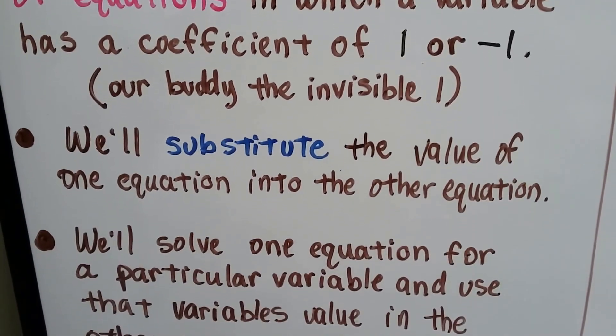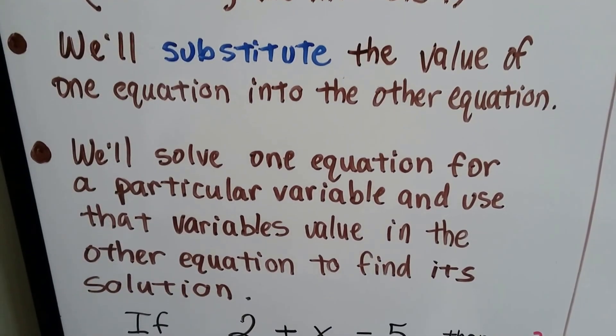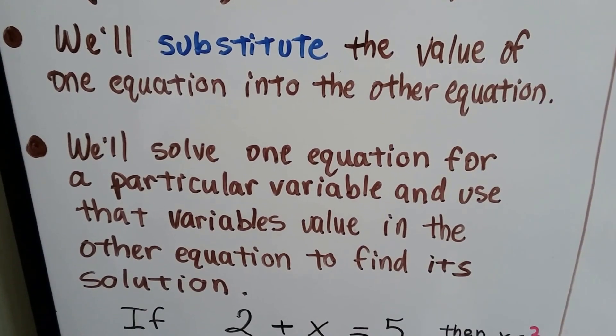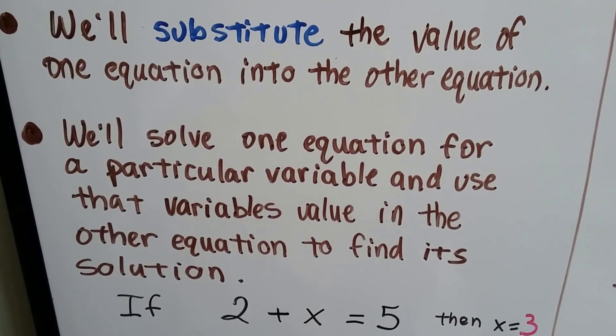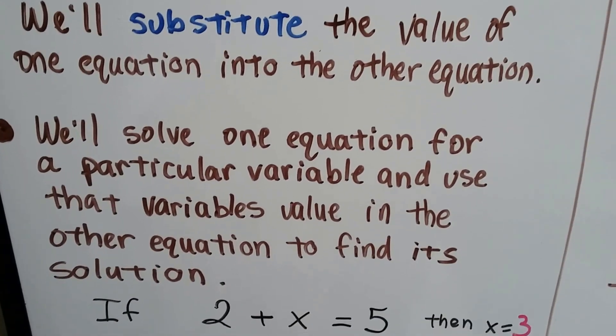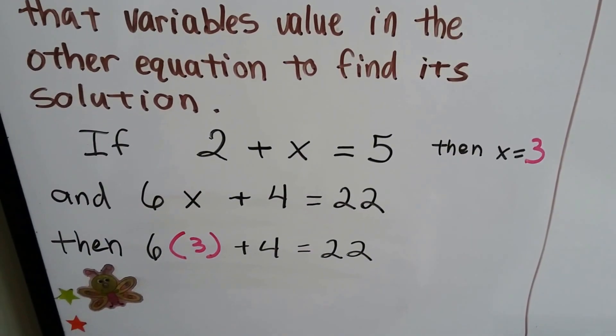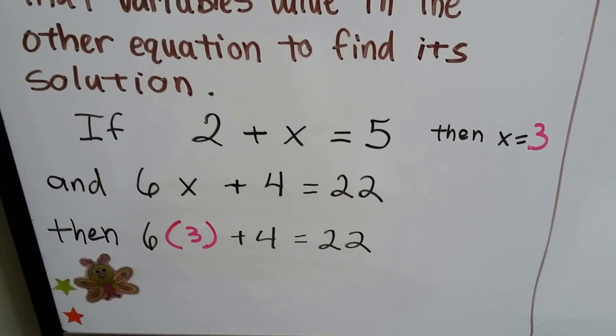We'll substitute the value of one equation into the other equation, and we'll solve one equation for a particular variable and use that variable's value in the other equation to find its solution. Now if that sounds really confusing, here's an example with one variable. We're going to be doing this with two variables, but just to show you, here's one variable.